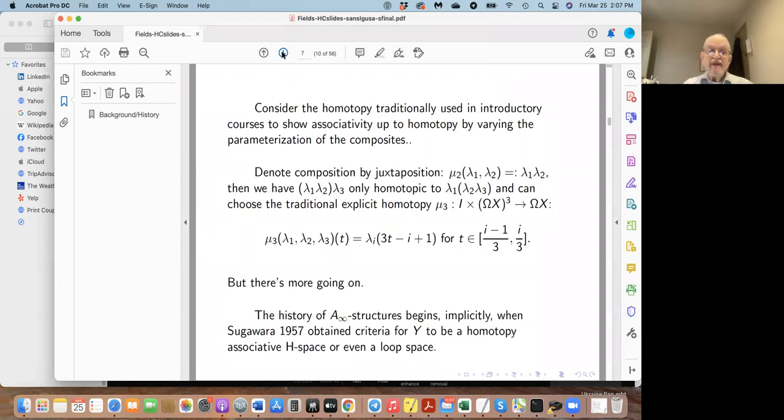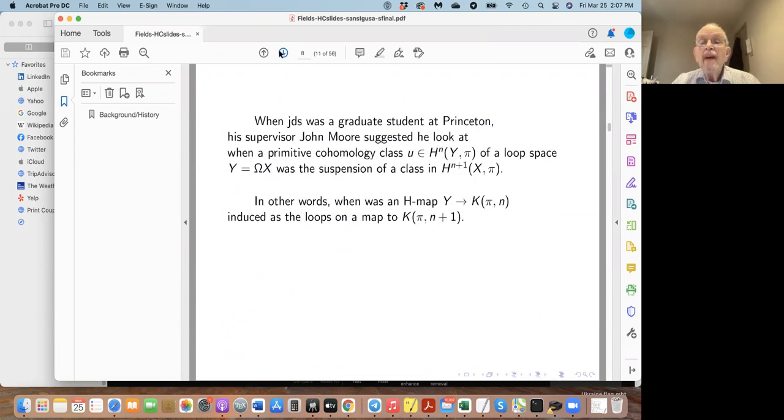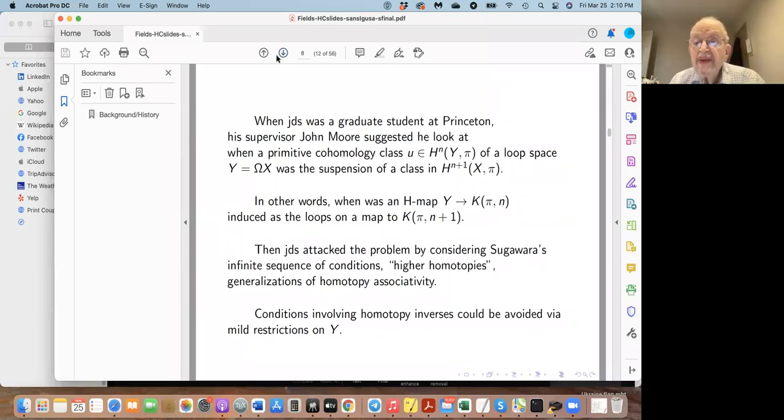But there's much more going on. The history begins implicitly when Sugawara in 1957 obtained criteria for a space to be a homotopy associative H-space or even a loop space. When I was a graduate student at Princeton, my supervisor John Moore suggested I look at when a primitive cohomology class is in fact the suspension of a class—that is, when is a map from Y into K(π,n) induced by a map from Y to K(π,n+1)?